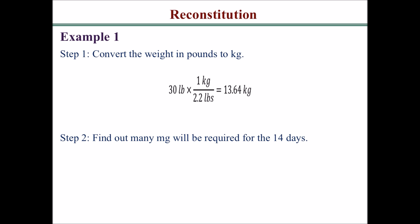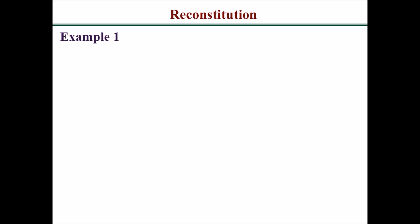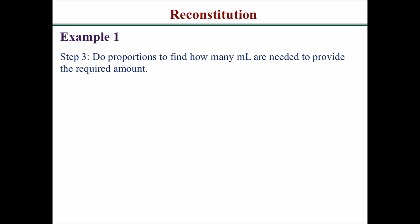You get 13.64 kilograms. Step two: find out how many milligrams will be required for the 14 days. That would be 13.64 kilograms times four milligrams per kilogram times three doses per day times 14 days, which equals 2,291 milligrams.